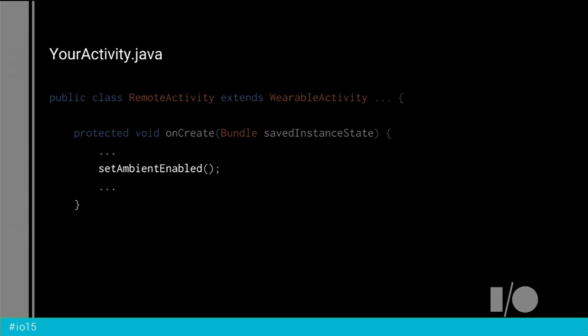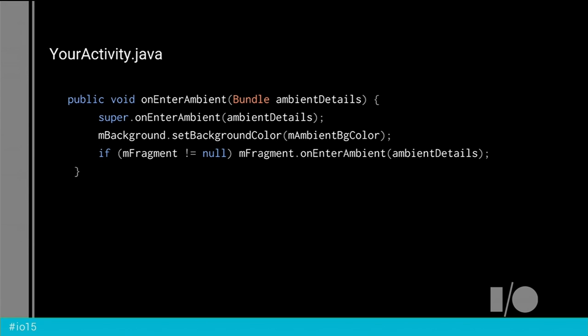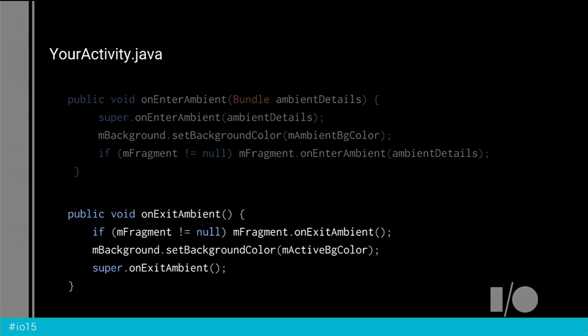There are also three important callbacks that your activity is going to get. The first one is called onEnterAmbient — this is called every time the watch goes from the high-power interactive mode into the low-power ambient mode. You can see here, in this real code fragment from the Android TV remote app, we're setting the background color to black and updating the rest of our UI to look different, turning on the time in that low-power mode. The second one is called onExitAmbient — this is called when we move from low-power ambient mode back into interactive mode, where you just reverse those changes you made going into ambient mode.